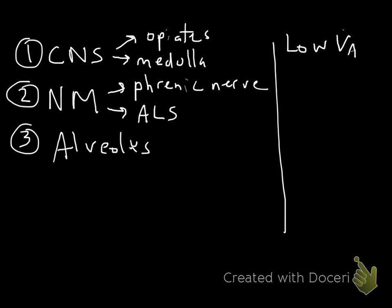If the alveolus is filled with blood, pus, or other fluid, then that will impair the ability of carbon dioxide to diffuse across the alveolar membrane and be eliminated from the body. So we're talking about pulmonary edema or pulmonary hemorrhage, for instance.